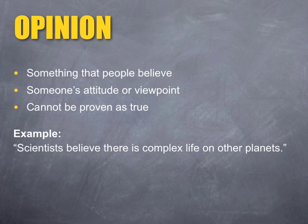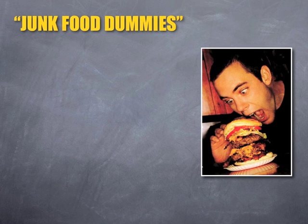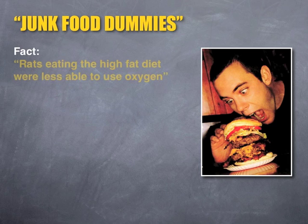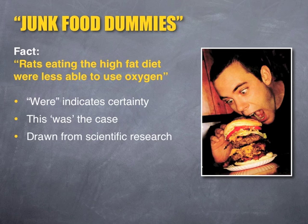Let's apply this to the media text and look at fact and opinion in 'Junk Food Dummies' on page 9. In paragraph 5, Brook writes about the findings of the research team. Because the information is scientific and refers to percentages, we assume that it's factual. For example: 'rats eating the high fat diet were less able to use oxygen.' For the exam, we need to look at the language Brook uses to confirm this is a fact. The word 'were' indicates certainty — combined with the scientific research context, we can safely assume it is factual and not merely the writer's opinion.